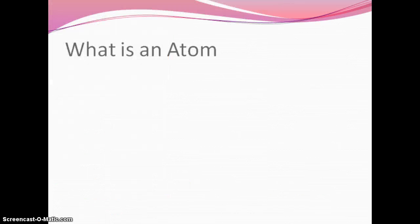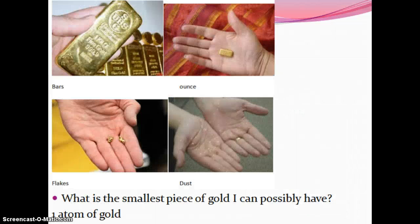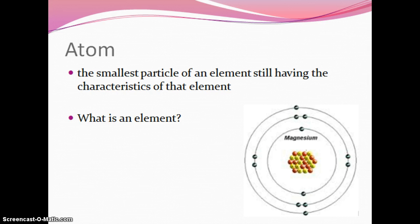So what is an atom? An atom is the smallest particle of an element still having the characteristics of that element. I can keep cutting a piece of gold smaller and smaller, and if I had the right technology — which in labs they do — the smallest possible piece I could have that was still gold would be one atom of gold.